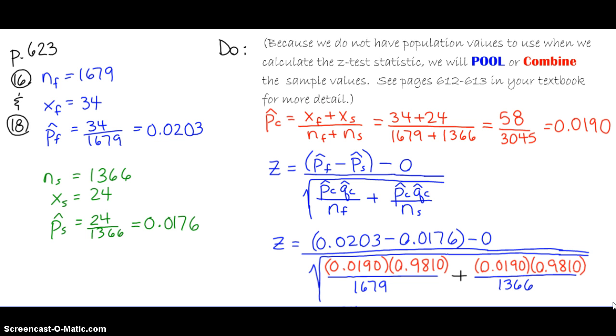We started to do our do in class, but we got held up, and the thing that we need to remember here is that we don't have population values. Normally what we do in confidence intervals is we use the sample statistic values because we're trying to estimate the population parameters. When we conduct a hypothesis test, we have a claim, so that's normally what we use, is the information in our null hypothesis to conduct the test.